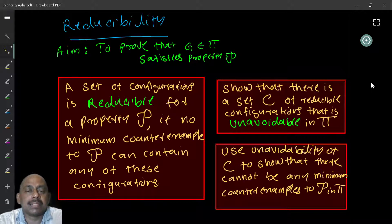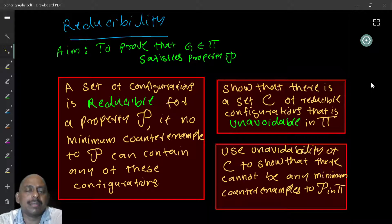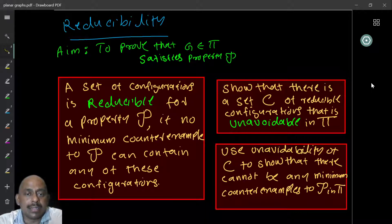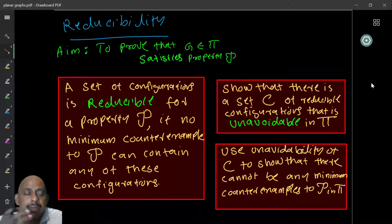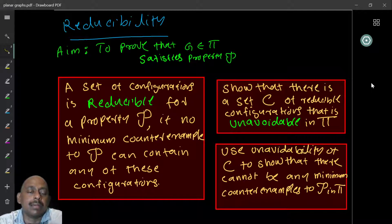A substructure or configuration is reducible if minimum counterexamples cannot contain these configurations. Concretely, if a graph has a reducible configuration and the property is not true for this graph, then even after removing that particular substructure the remaining graph is also a counterexample — meaning the original cannot be a minimum counterexample.